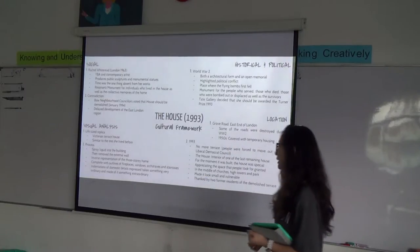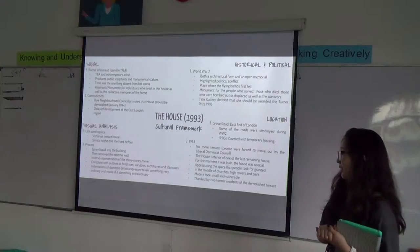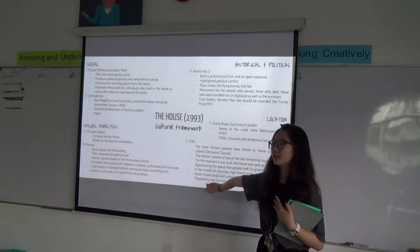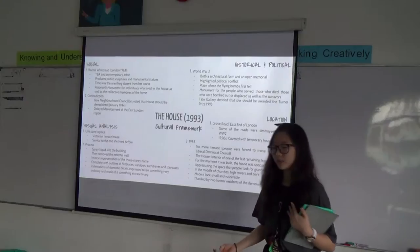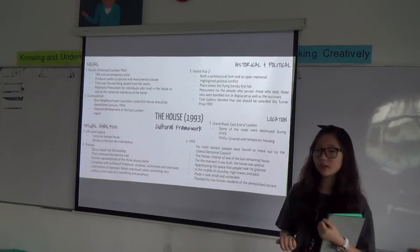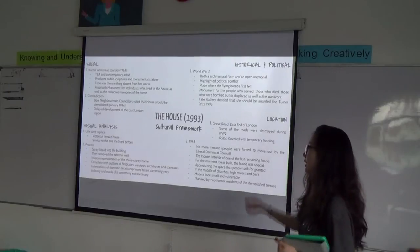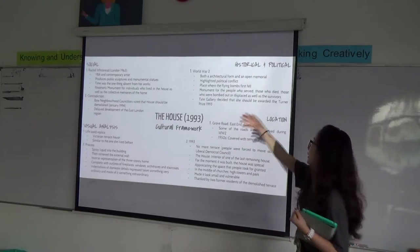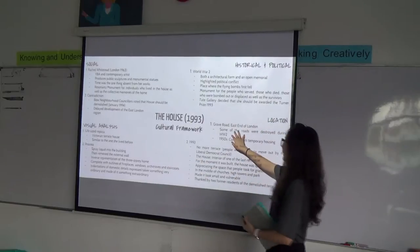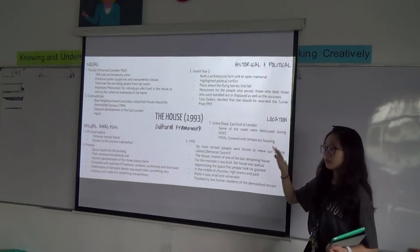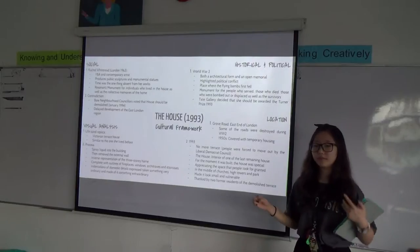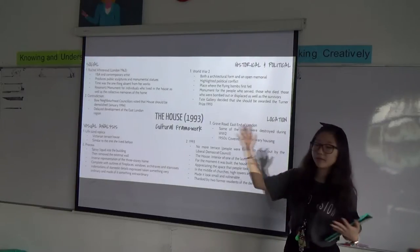There were indentations of domestic details expressed in the work. Rachel Whiteread is an artist who likes to take something disregarded, something not meaningful, something very ordinary, and make it something very extraordinary — like the house. Moving to the location: the house is located in Grove Road, East London, which is very relevant to what I was discussing earlier. Most of the roads there were destroyed during World War II because of the flying bomb, including some of the houses in Grove Road.